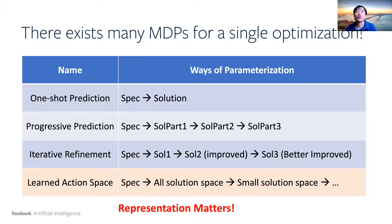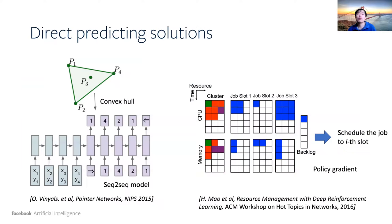You can also start with an initial guess and refine it at each MDP step. Finally, you can even learn what the best action space is so that the resulting MDP becomes easier to solve. This shows that representation really matters for solving optimization problems. For direct solution prediction, papers from 2015 onward use sequence-to-sequence models to directly predict solutions without search or refinement — these were the first trials using machine learning for combinatorial problems.